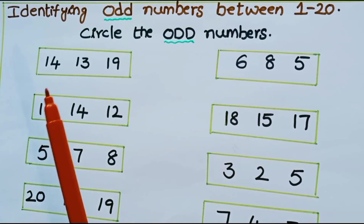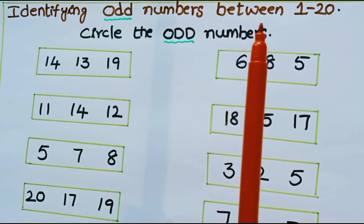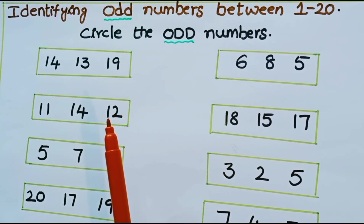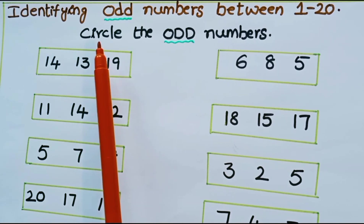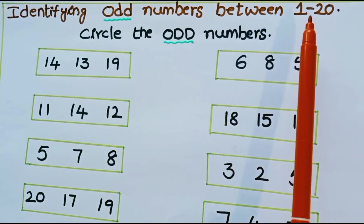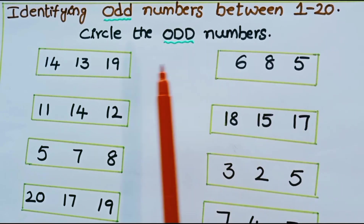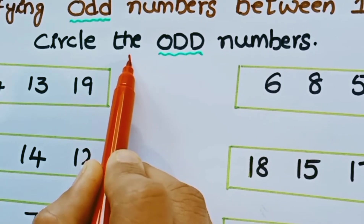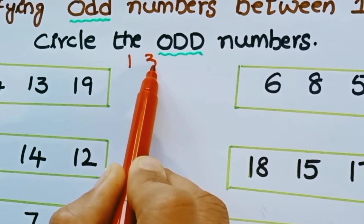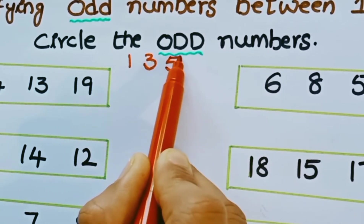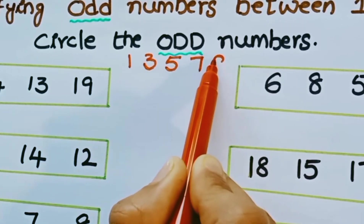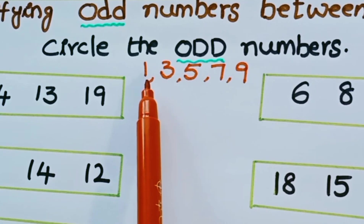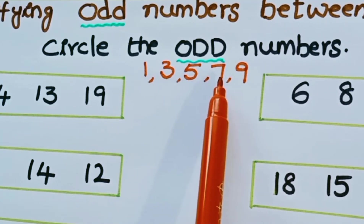Now look at one more worksheet: identify odd numbers between 1 to 20. We have to identify and circle the odd numbers between 1 and 20. What are the odd numbers? 1, 3, 5, 7, 9. The odd numbers end with 1, 3, 5, 7, or 9.